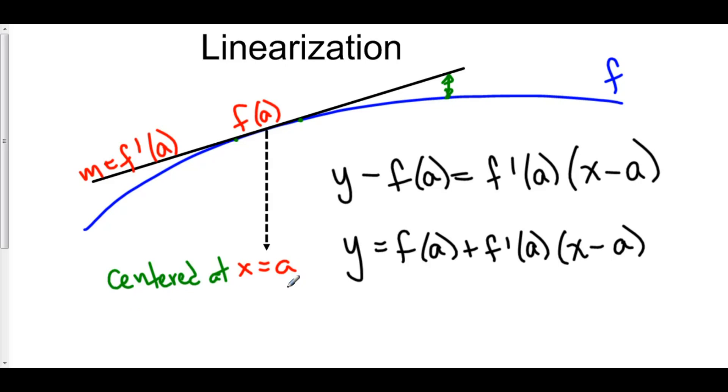And the way that we describe our linear approximation is by saying it is a function l of x. So, l of x replaces y, and it's equal to f of a, plus f prime of a, times x minus a.